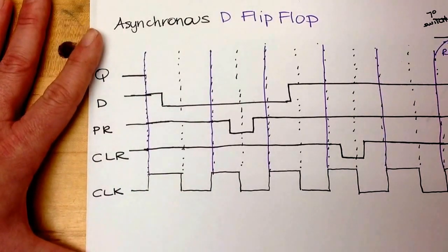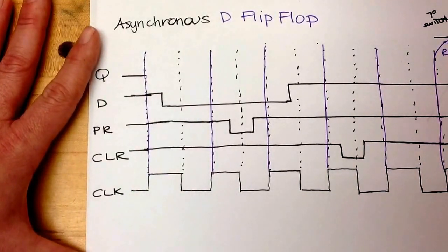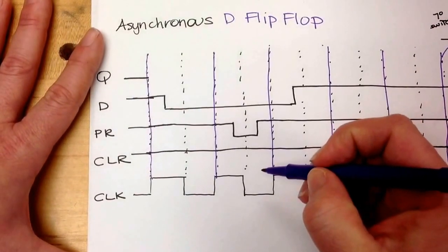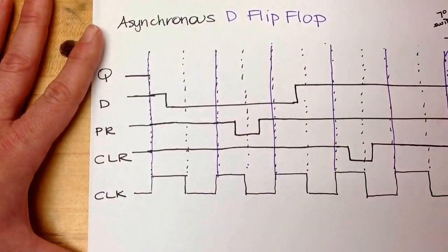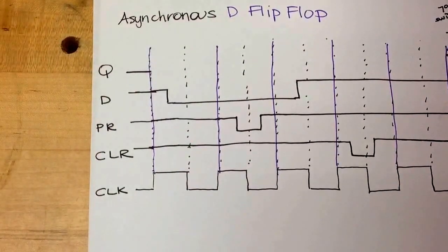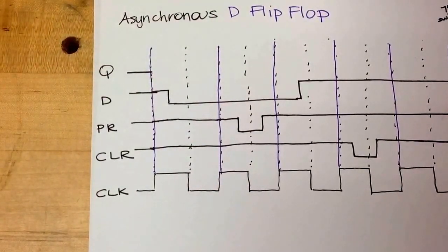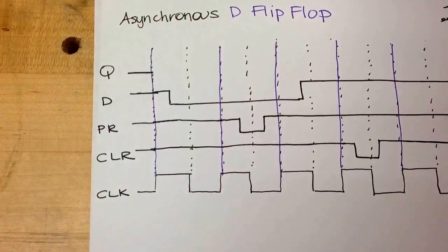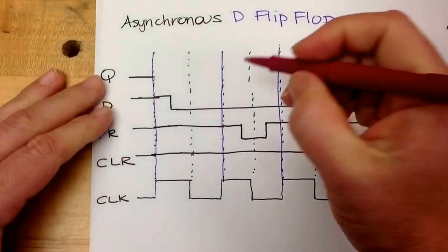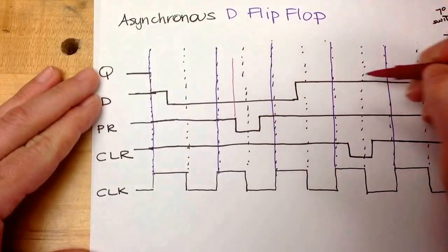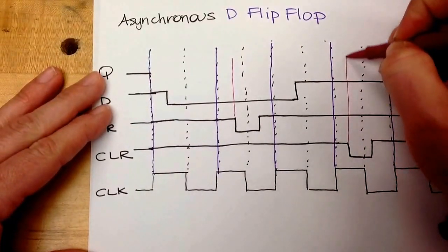Those are all rising edges of the clock and I've marked all those. The other place that I'm going to respond is when the preset or the clear go to zero, so I'm going to mark those too — just marking them so that I'll know I have to look at them there, here, and here.